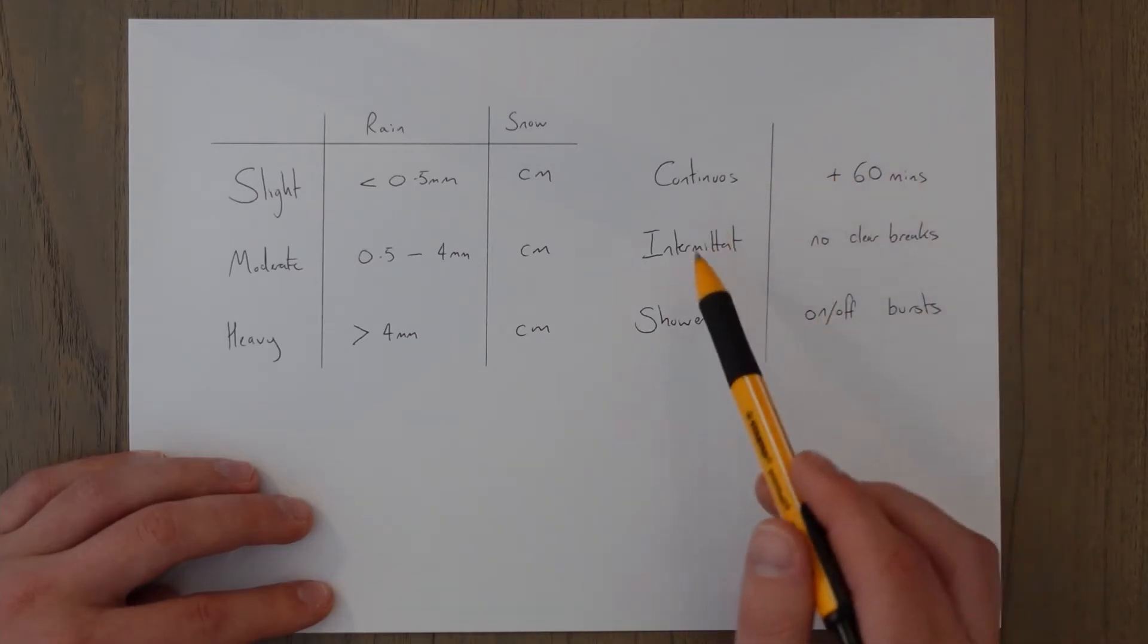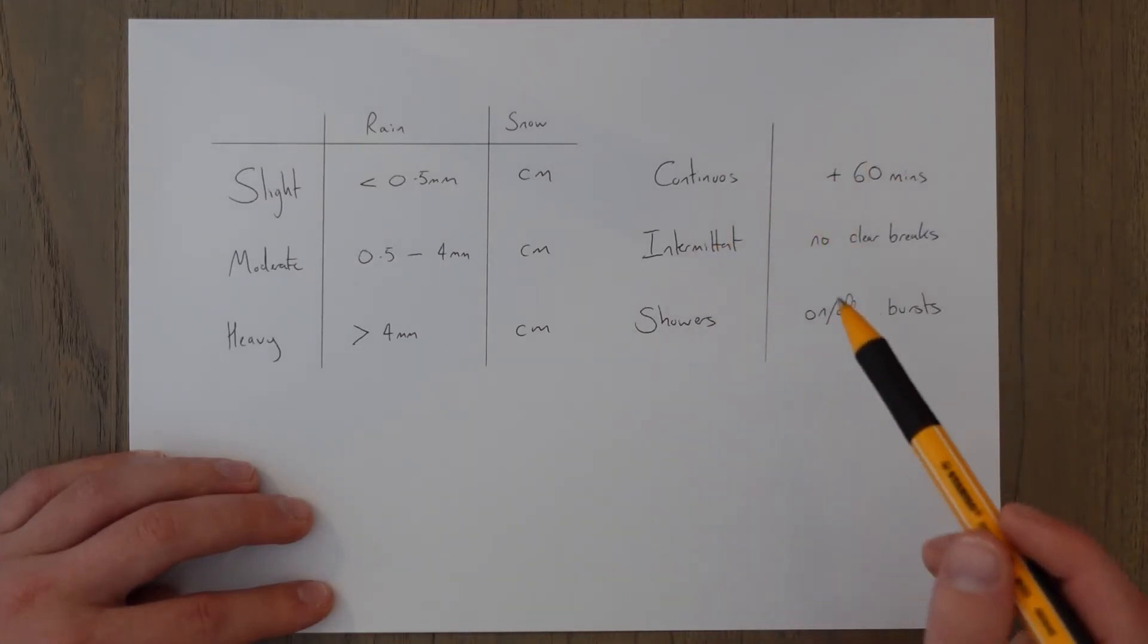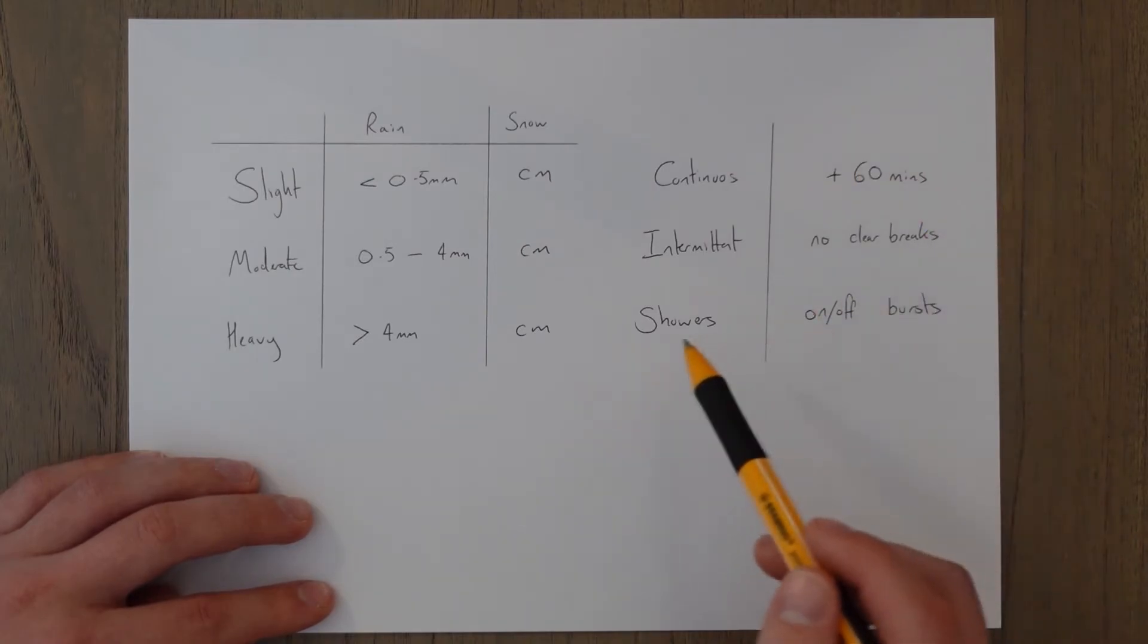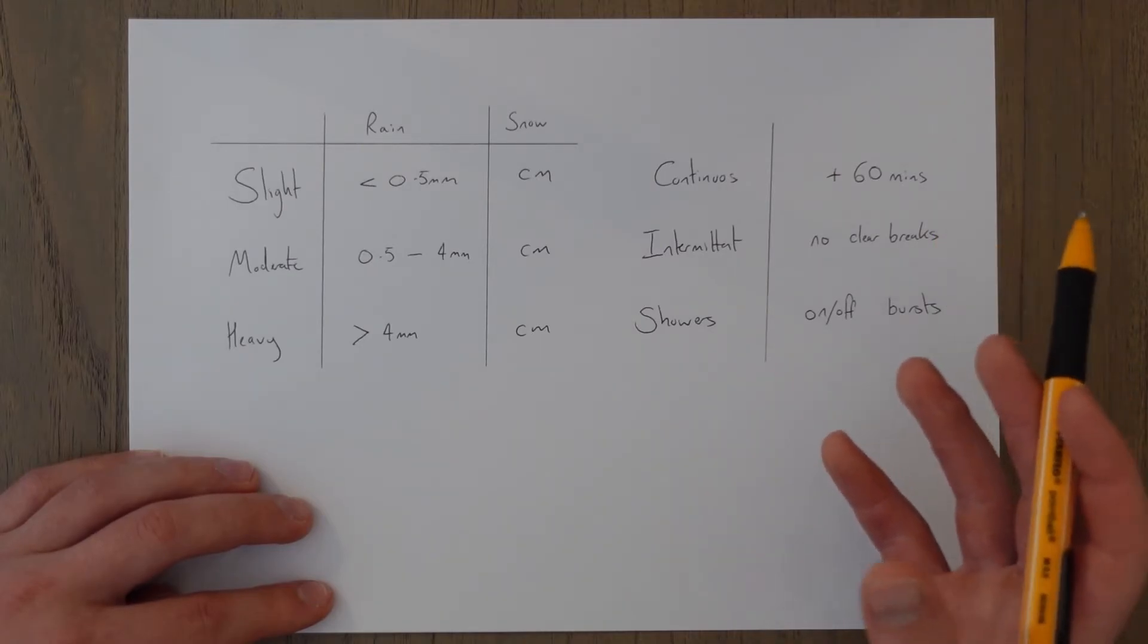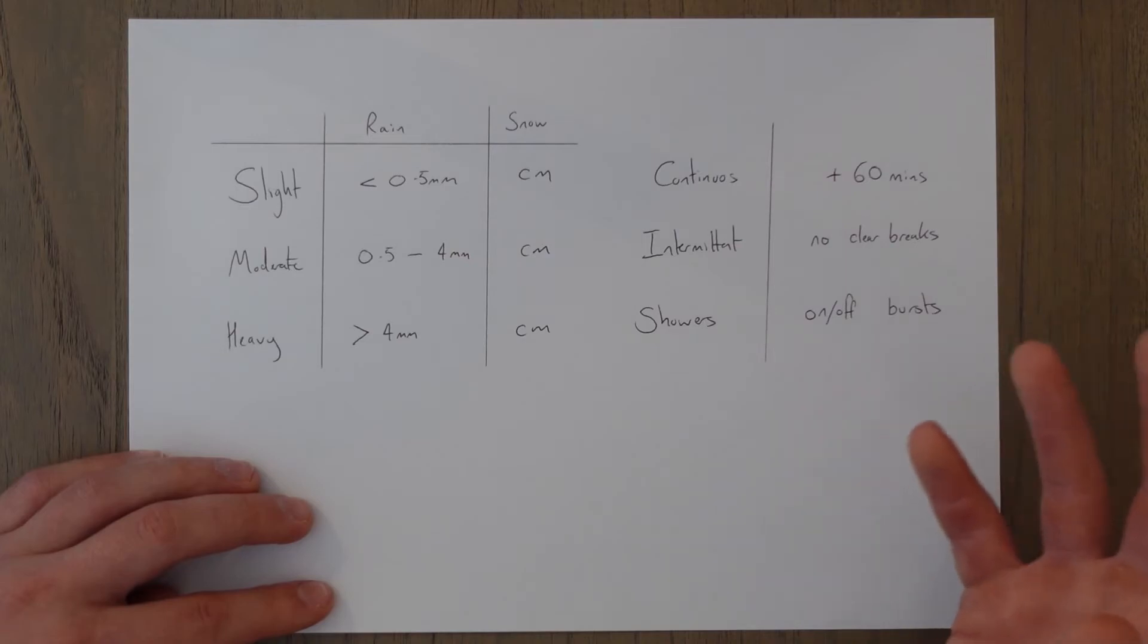You can think of continuous and intermittent as associated more with stratiform clouds and showers on off precipitation as more associated with cumuliform base clouds like cumulonimbus or cumulus clouds in general.